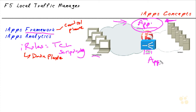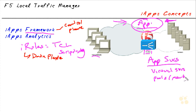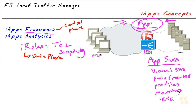So we have App Services — created with the templates — and they will be managing our virtual servers, our pools and members, profiles, health monitors, and other things. My application services bundle, or configuration object bundle, is going to be set up by this workflow. My iApps framework actually consists of four parts.